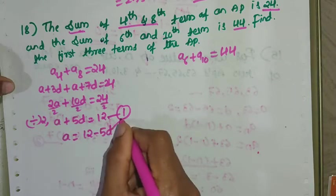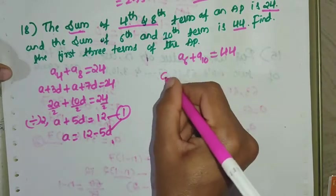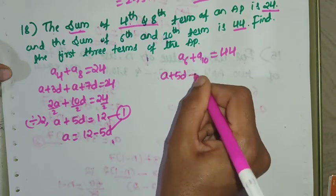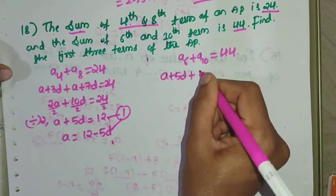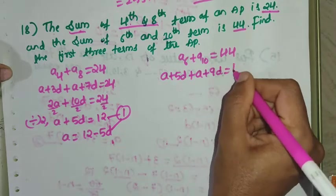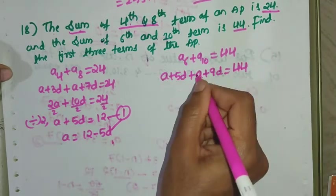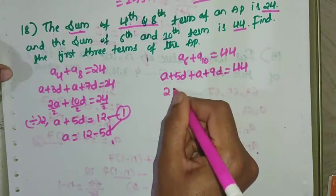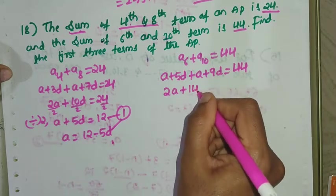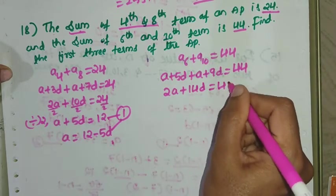Then A_6 can be written as A + 5D, and A_10 as A + 9D, and their sum equals 44. So 2A + 14D = 44.